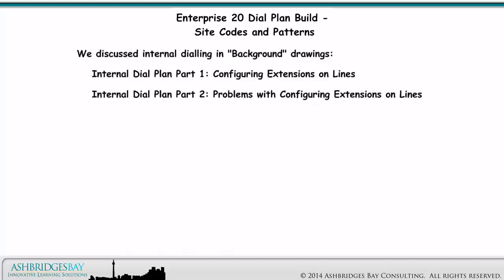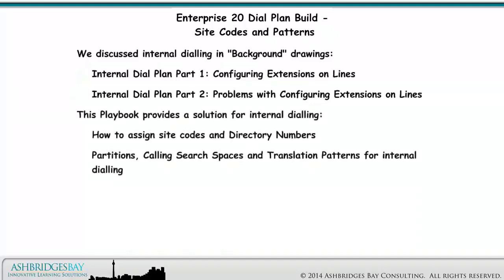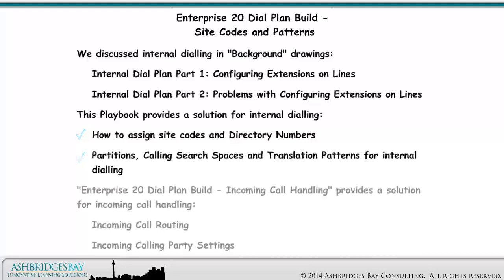We discussed internal dialing in background drawings: Internal Dial Plan Part 1, Configuring Extensions on Lines, and Internal Dial Plan Part 2, Problems with Configuring Extensions on Lines. This playbook provides a solution for internal dialing — how to assign site codes and directory numbers, partitions, calling search spaces, and translation patterns for internal dialing. Enterprise 20 Dial Plan Build, Incoming Call Handling, provides a solution for incoming call handling, incoming call routing, and incoming calling party settings.